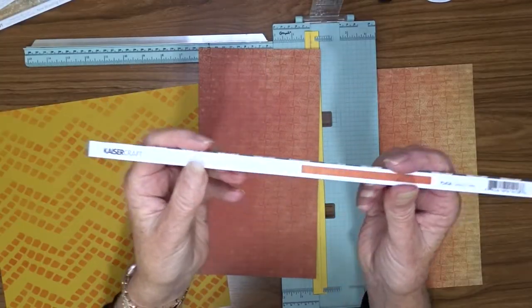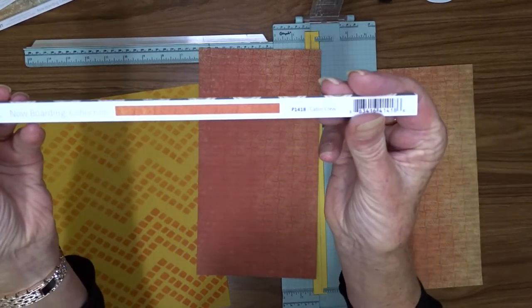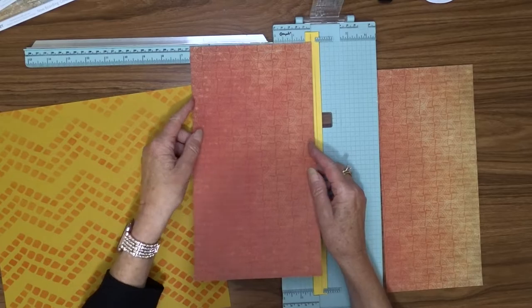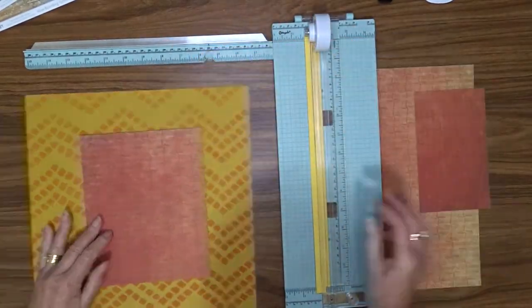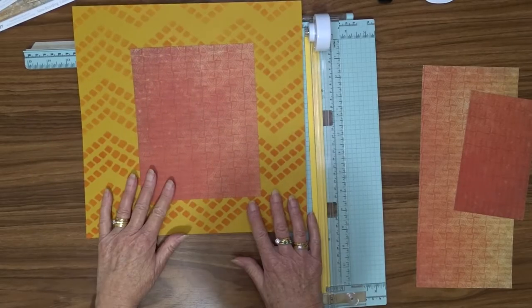For my first pattern paper, I'm going to use the Kaiser Craft Now Boarding—this paper is called Cabin Crew—and I'm going to trim that down so it's six and a half inches by eight inches.